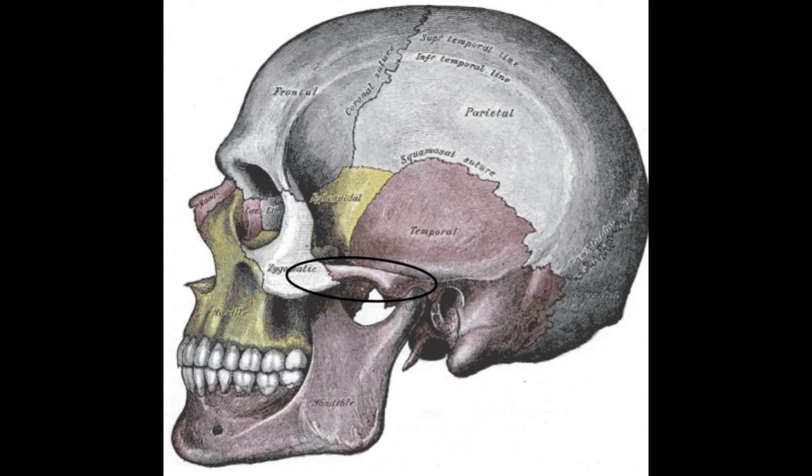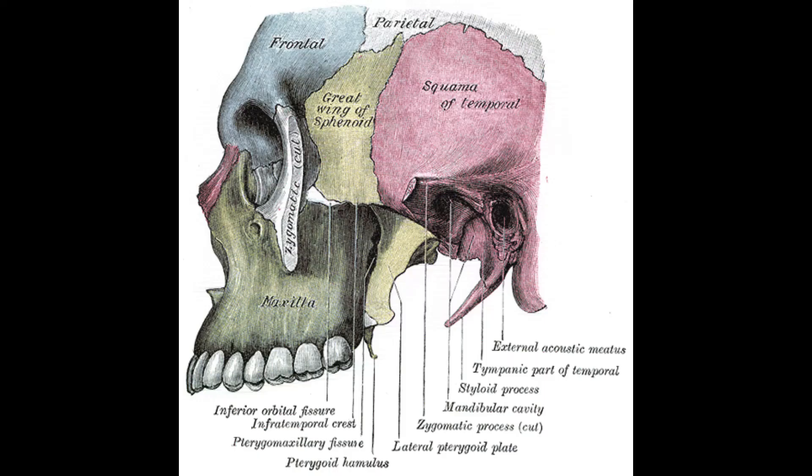This is the zygomatic arch — anteriorly it is part of the zygomatic bone, and posteriorly it is part of the temporal bone. Again, this serves as the primary superior attachment for the masseter muscle.